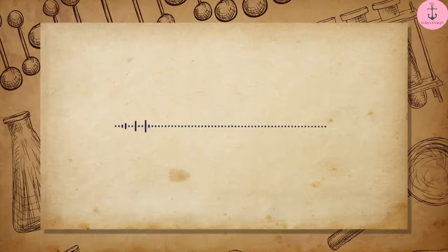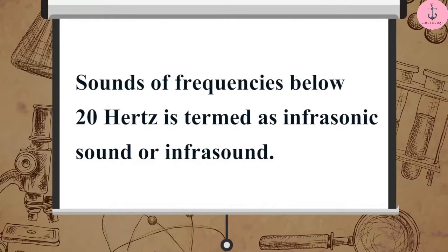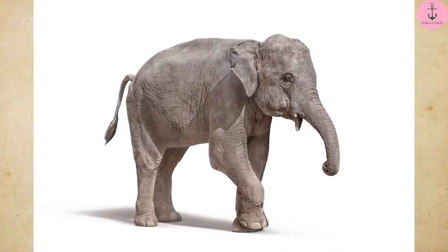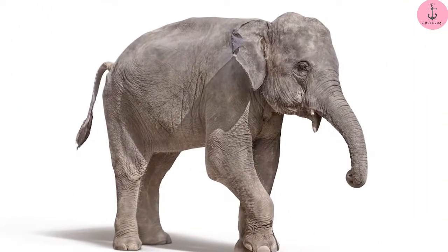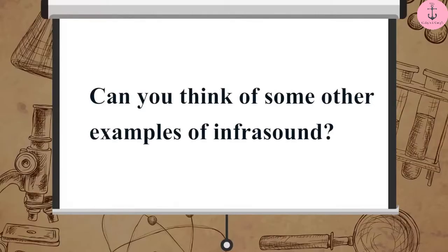Now, let us learn about the low range of sound which is not audible to human beings. Sounds of frequencies below 20 Hz is termed as infrasonic sound or infrasound. Elephants also produce sound in the infrasound range. Can you think of some other examples of infrasound?